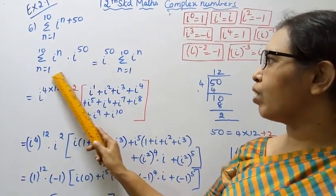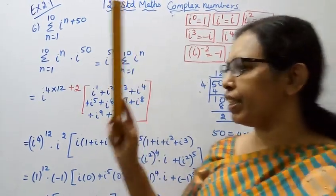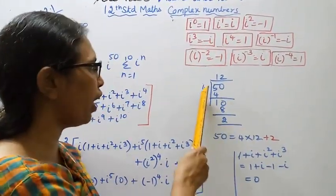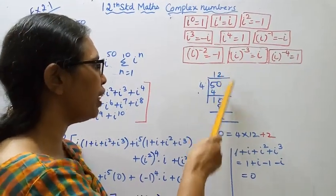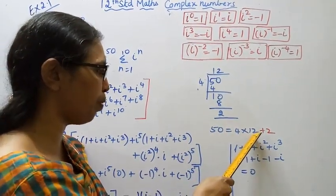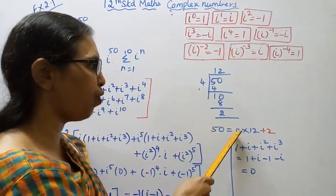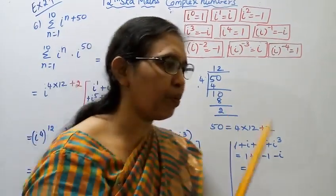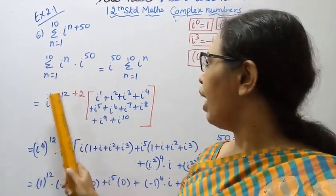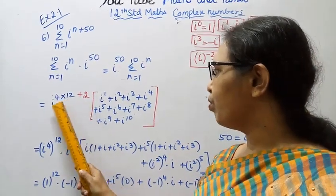Sigma n equal to 1 to 10, i power n. 50 divided by 4 gives quotient 12 and remainder 2. So i power 50 equals i power 4 into 12, plus 2.